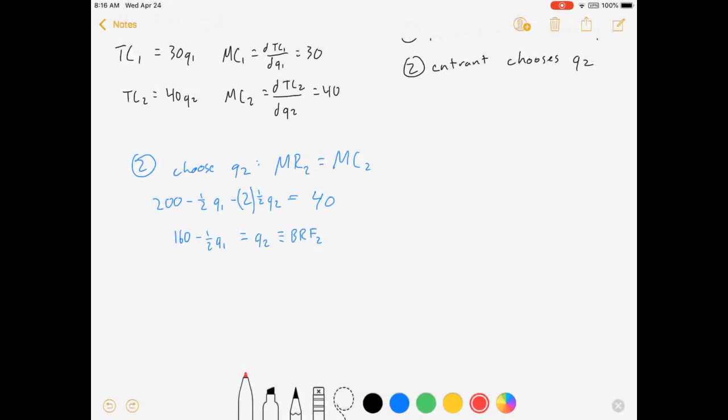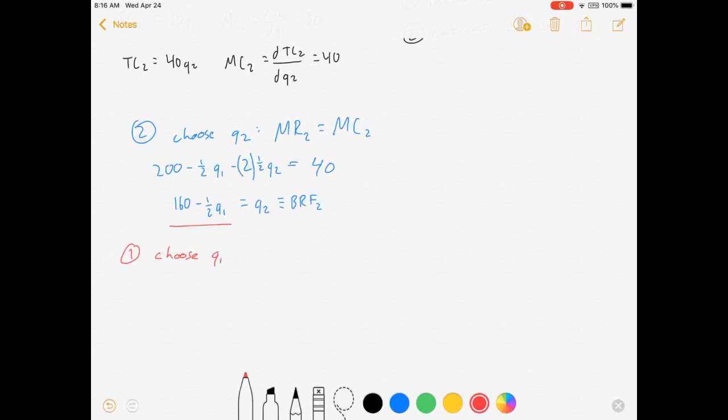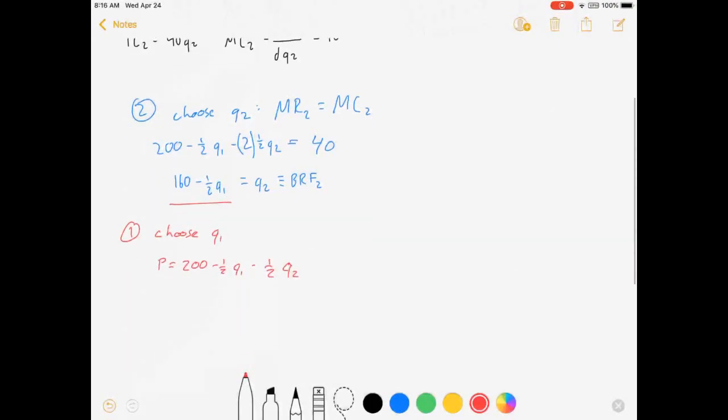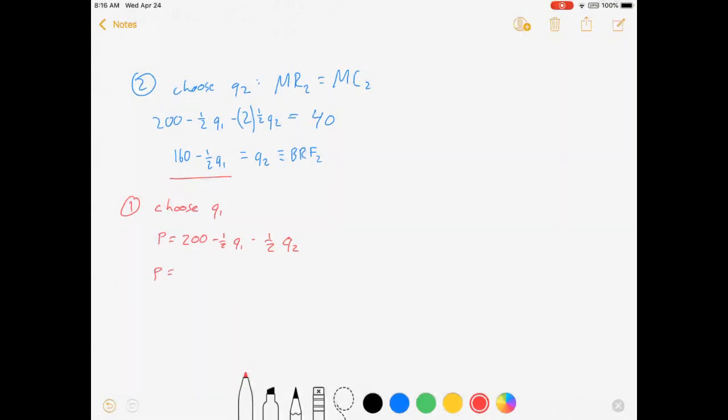Now, firm one, we have a game with complete information and no uncertainty and all that stuff. Firm one now gets to choose Q1. And it's going to do so knowing that this is what firm two wants to do. So firm one, before it even does any calculus, before it chooses its quantity, we're going to let them modify their demand curve, substituting in this value. Let me show you what I mean real quick. Before we do anything, let's do our demand curve. It goes 200 minus one-half Q1 minus one-half Q2. All right, so there's the demand curve. But we can substitute in the best response function.